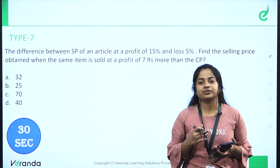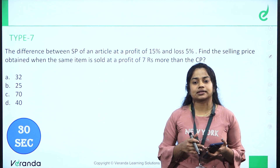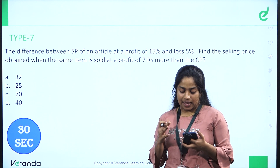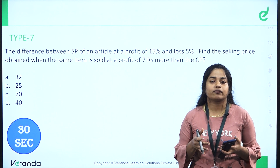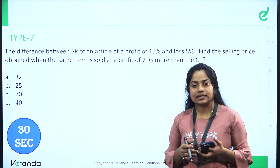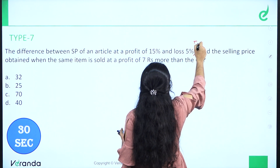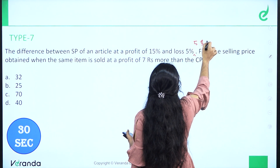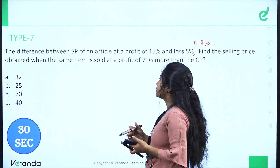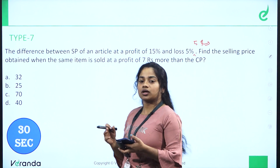Okay, Question 1. The difference between the Selling Price of an article at a Profit of 15% and a Loss of 5% is 5 rupees. Find the Selling Price obtained when the same item is sold at a profit of 7 rupees more than the Cost Price.